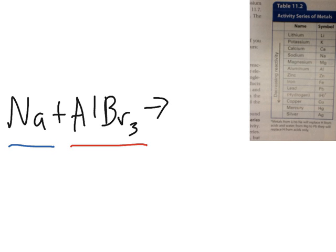In this case, the first thing you have to check is you look at this lone thing right here and see if it's positive or negative. Right here it's Na, so it's sodium, it's a positive. We look at the table, it's a plus one on the periodic table.